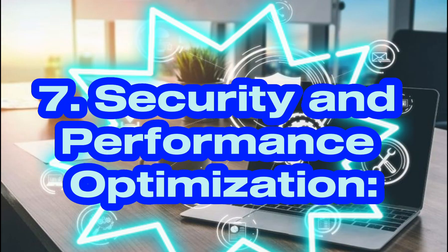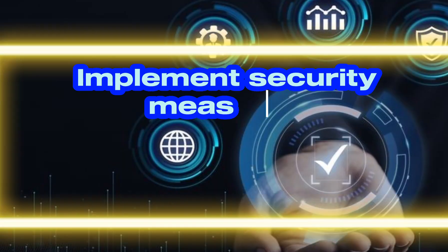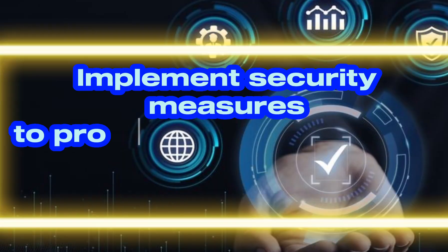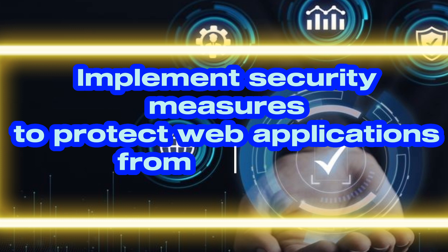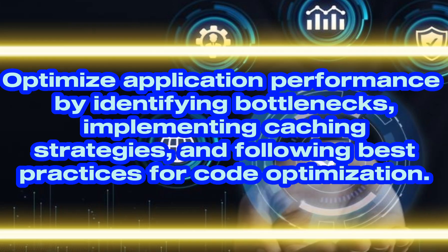Seven: Security and performance optimization. Implement security measures to protect web applications from common vulnerabilities. Optimize application performance by identifying bottlenecks, implementing caching strategies, and following best practices for code optimization.